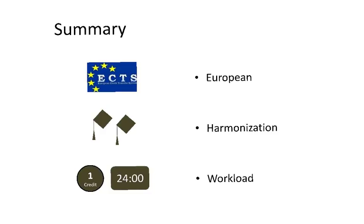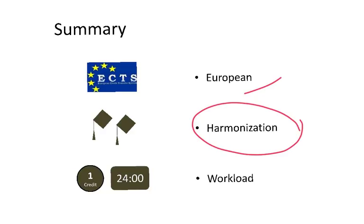As a summary, we can say that this ECTS system is a European system which aims for harmonization. So Maxim could come to Istanbul and Mikhail could go to Amsterdam, taking classes which are part of their own degrees, and because this is based on workload which is different to class hours. Thank you very much for listening.